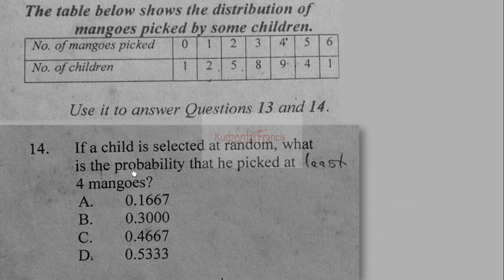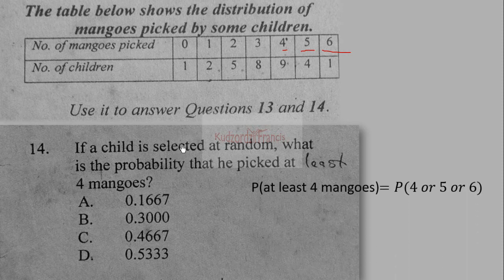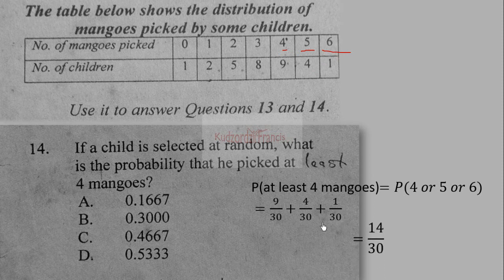If a child is selected at random, what is the probability that he picked at least four mangoes? At least four mangoes means four or more, so we consider four, five, and six mangoes. The probability is P(4) + P(5) + P(6) = 9/30 + 4/30 + 1/30.